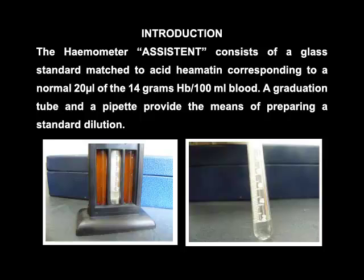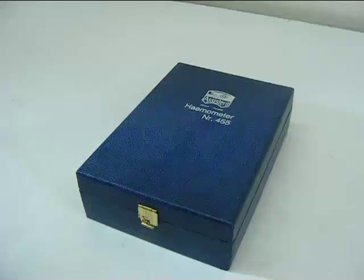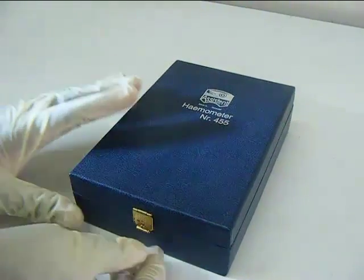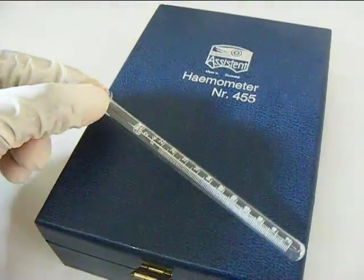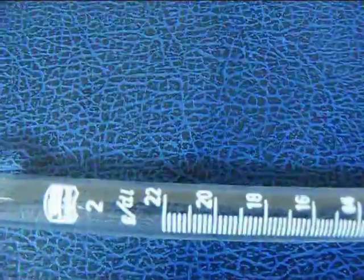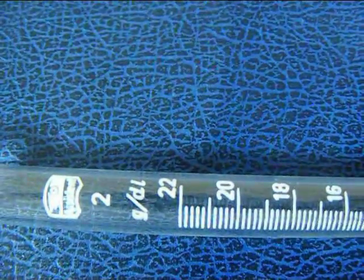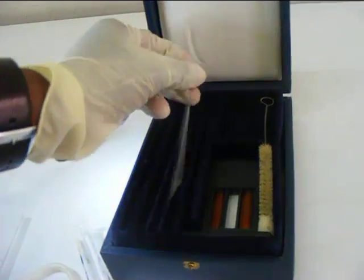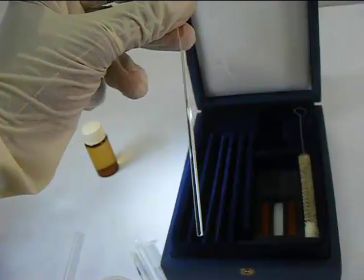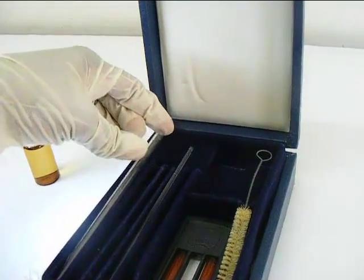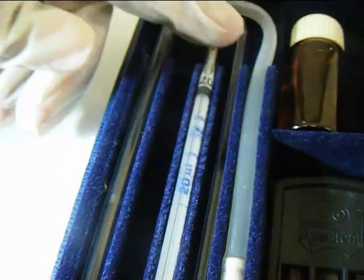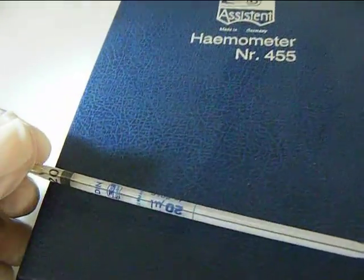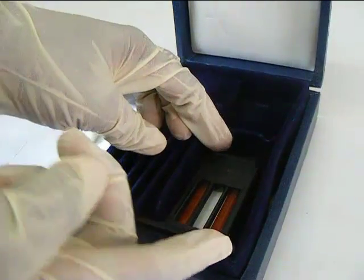In the determination of hemoglobin concentration, a hemometer assistant is used. It consists of a plastic tube, a glass stirrer, a glass tube, a pipette, and a color matching chamber.